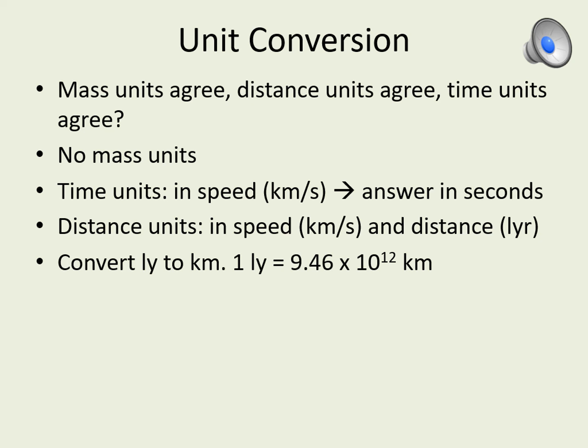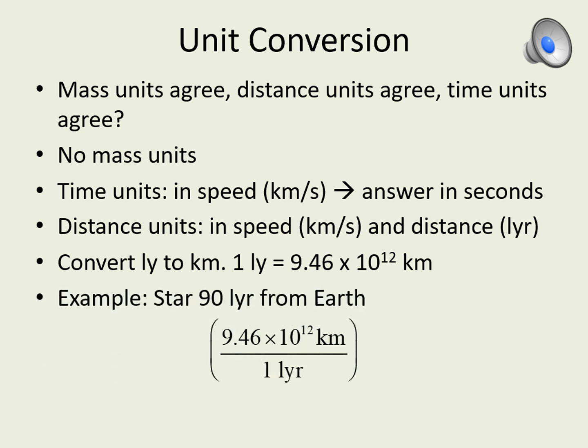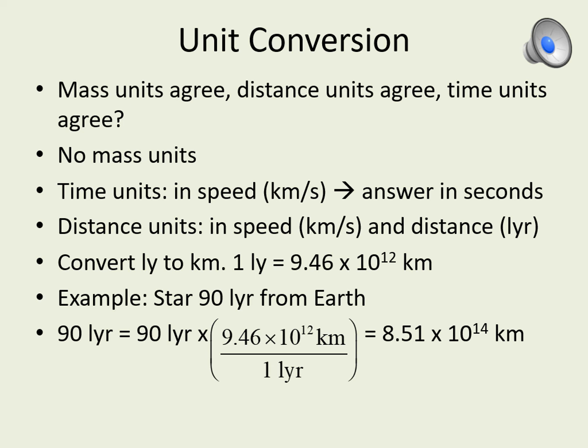Our conversion factor in this case will be 9.46 times 10 to the 12 kilometers per one light year. This will be easier to follow if we do an example. Let's look at a star that has a distance of 90 light years. We want to turn that into kilometers, so we multiply 90 light years by 9.46 times 10 to the 12 kilometers divided by one light year. We must cancel our units carefully to make sure the right units come out in our answer. That gives us 8.51 times 10 to the 14 kilometers. Remember to stop and think about whether the answer makes sense — if it's many light years it should be a bigger number than one light year, and that's what we're seeing here. The 10 to the 14th is bigger than 10 to the 12th, so the answer makes sense.